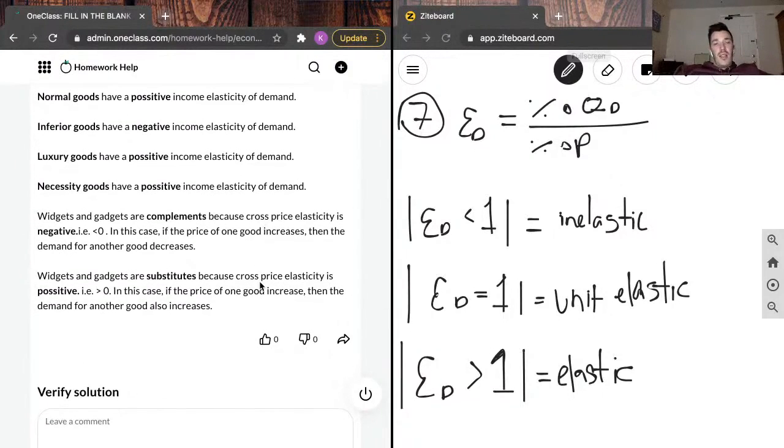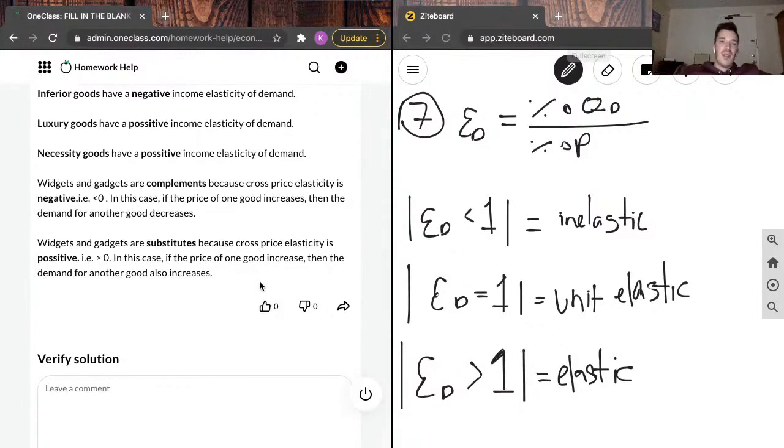Lastly, it's true that widgets and gadgets are complements, because cross-price elasticity is negative. In this case, if the price of one good increases, then the demand for another good decreases. And widgets and gadgets would be substitutes if cross-price elasticity is positive. In this case, if the price of one good increases, then the demand for another good also increases.